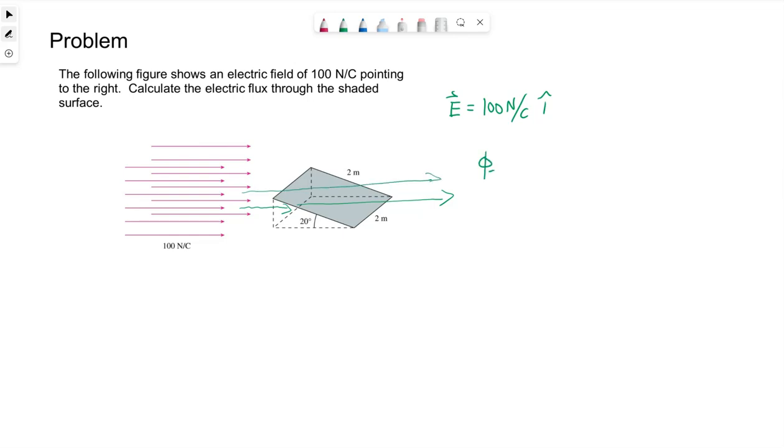Now electric flux, we can write as the dot product. This is a uniform electric field. It has a value of 100. It doesn't have a variable of x or y or z in it to suggest that it's changing depending upon position. So the dot product, we can either write both vectors in terms of their x and y and z components, and then do the dot product. Or we can take the magnitude of the two vectors and multiply that by the cosine of the angle between them.